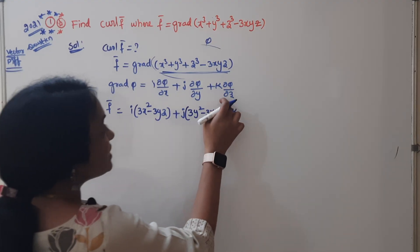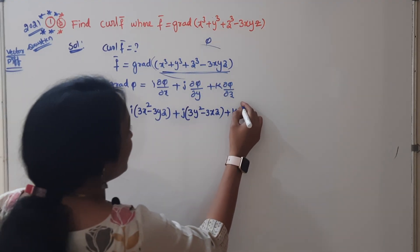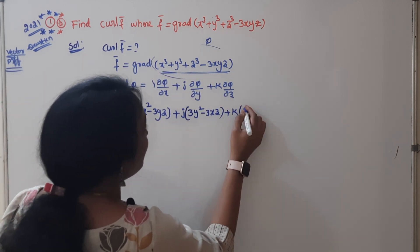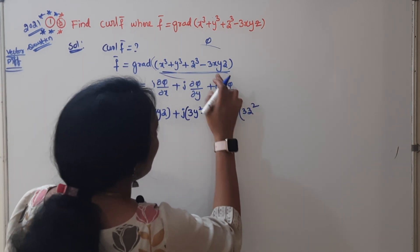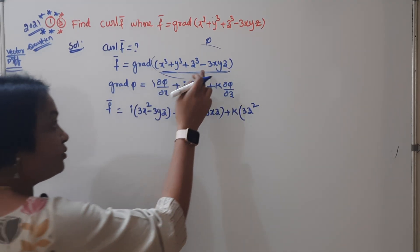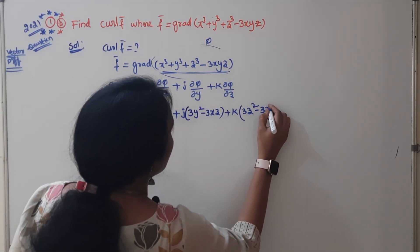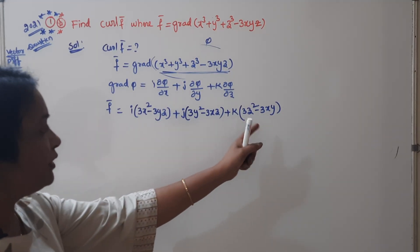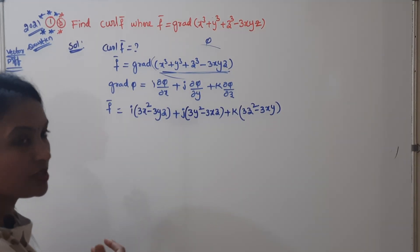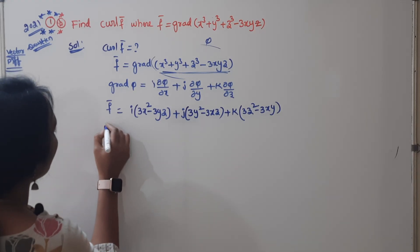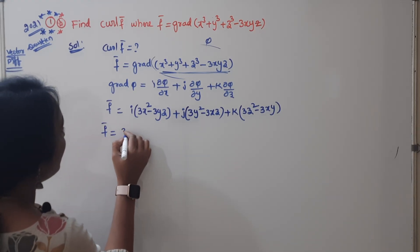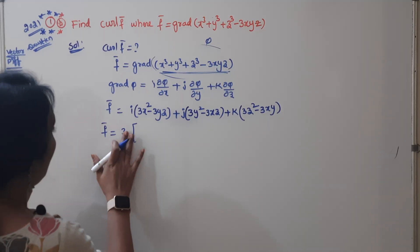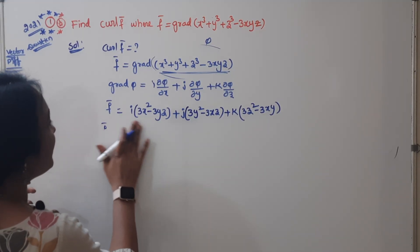For ∂φ/∂z: x and y terms are 0, z³ gives 3z², and -3xyz gives -3xy (z differentiates to 1). So the k component is (3z² - 3xy). Therefore, F̄ = i(3x² - 3yz) + j(3y² - 3xz) + k(3z² - 3xy). This is our F̄.